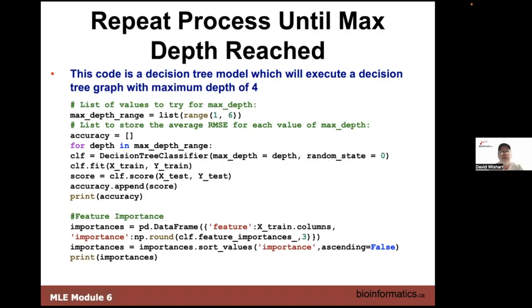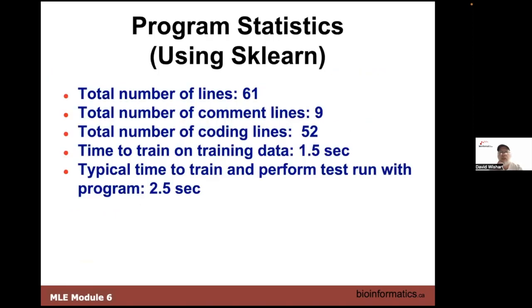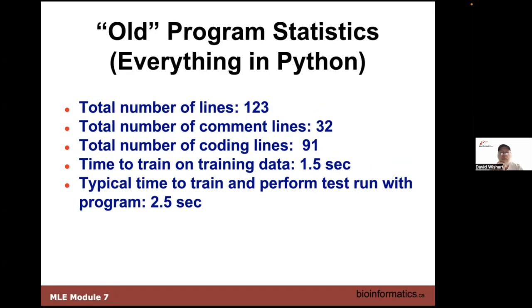The total number of coding lines is just 52 — not as heavily commented, but training time is very short and a test run is a couple of seconds. Compare that to the old program which was 123 lines — roughly 91 coding lines — roughly the same training and test time, but about twice as long to write.